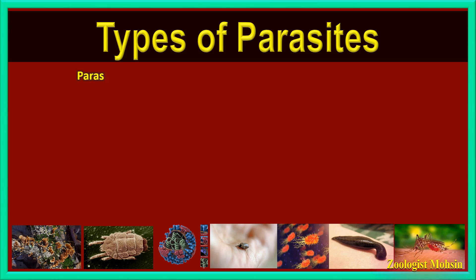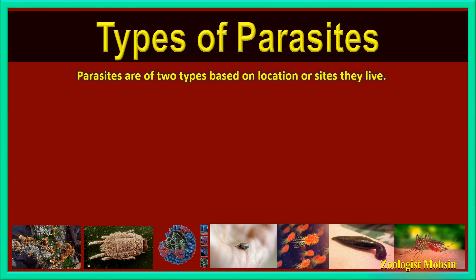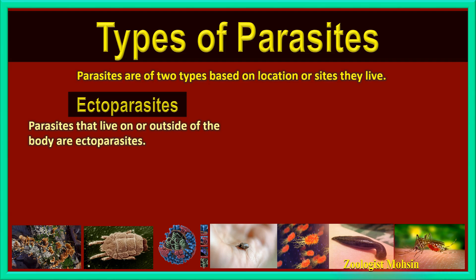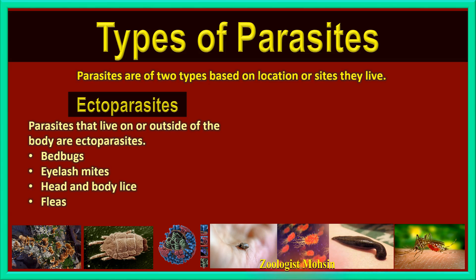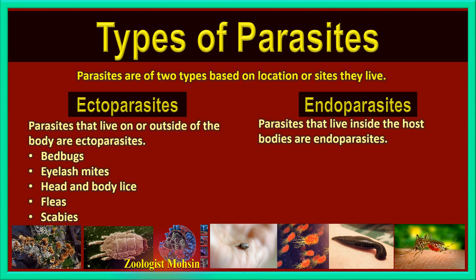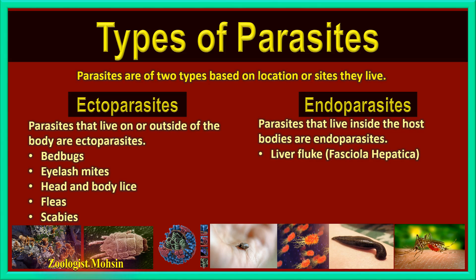The types of parasites are basically two, based on 'in' and 'on.' If parasites live on or outside the body of the host, they are called ectoparasites — for example, bed bugs, eyelash mites, head and body lice, fleas, and scabies. Endoparasites are those that live inside the host body and get nutrition or cause diseases.